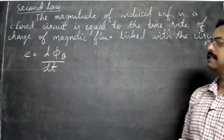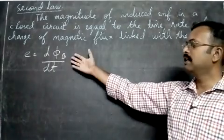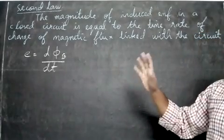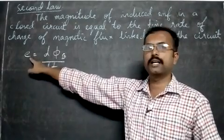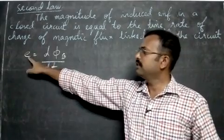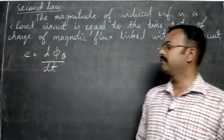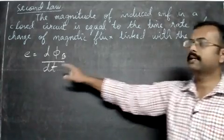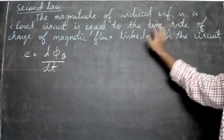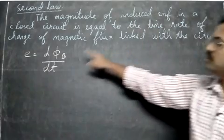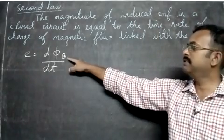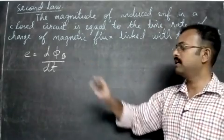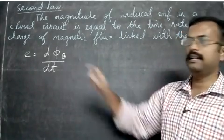Let us see what this means. We can express it in equation format — this is much simpler. The magnitude of induced EMF, we are not taking a vector here. E stands for the EMF, and it is equal to the time rate of change of magnetic flux — so we divide by time. That gives us: E is equal to dΦB by dT.